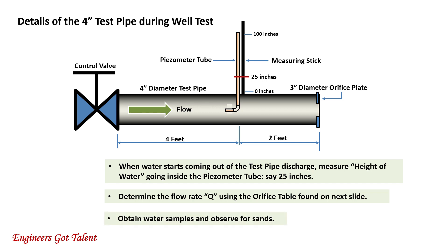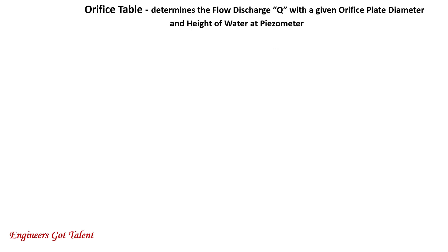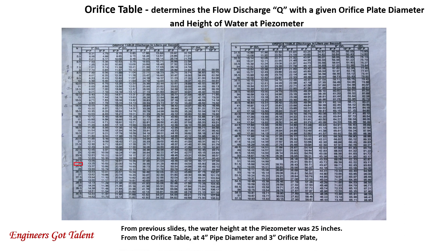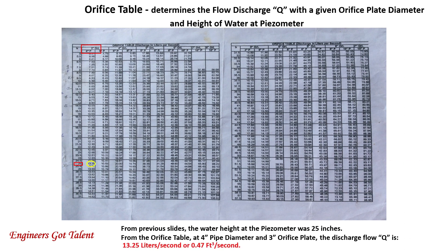Then determine the flow rate Q using the orifice table, and obtain water samples and observe for sands. This is the orifice table which determines the flow discharge Q with a given orifice plate diameter and height of water at the piezometer. From previous slides, the water height at the piezometer was 25 inches. At 4-inch pipe diameter and 3-inch orifice plate, the discharge flow Q is 13.25 liters per second or 0.47 cubic feet per second.